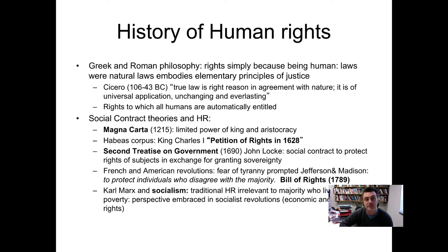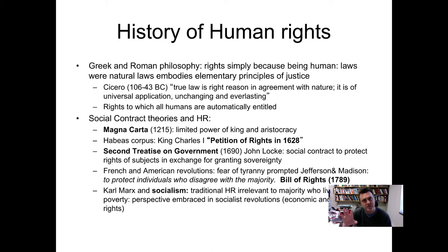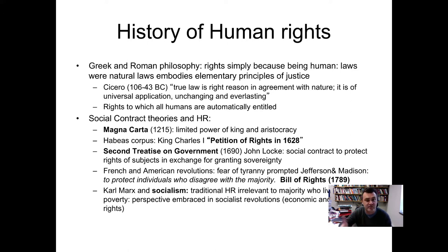Of course, that did not include women and slaves during that time. Looking at social contract theories, fast forward to the medieval age: the Magna Carta, which limited the power of the king and aristocracy; Habeas Corpus; King Charles I's petition of rights, which further diminished the absolute power of the monarch. Then we have the Second Treatise of Government — John Locke — the social contract to protect the rights of subjects in exchange for granting sovereignty.